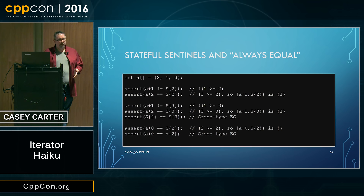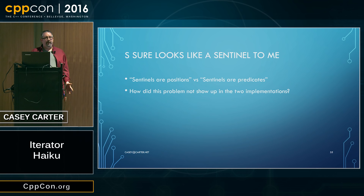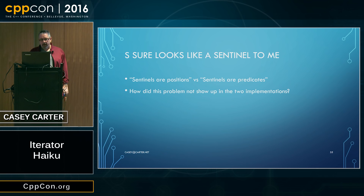It doesn't make sense to say sentinels always have to compare equal if sentinels are predicates that are allowed to have state. So even though S looks like a sentinel, it's not — it didn't satisfy the concepts. There was a contradiction. The problem is the 'sentinels are positions' idea versus the idea that 'sentinels are predicates' — they don't both make sense at the same time. We had two implementations, and strangely enough, neither had stumbled across this issue or exploded, despite the contradiction. Something must be going on where the algorithms aren't using this requirement.